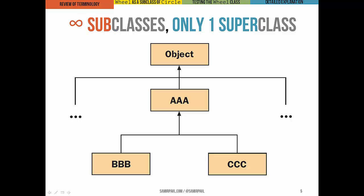Now a class can have many, multiple, as many subclasses as it would like. But every class except Object, of course, which is at the root, every class except Object has exactly one superclass. AAA has multiple subclasses, BBB and CCC. But it has only one superclass, which is Object.